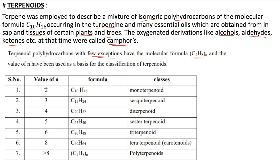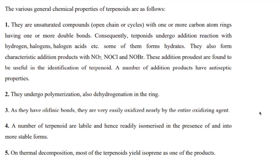The value of n decides the different classes: if n = 2, they are called monoterpenoids with formula C₁₀H₁₆; if n = 3, sesquiterpenoids with formula C₁₅H₂₄; for n = 4, diterpenoids; n = 5, sesterterpenoids; n = 6, triterpenoids; n = 8, tetraterpenoids (also called carotenoids); and if n is greater than 8, they are called polyterpenoids. This is the general nomenclature of terpenoids.